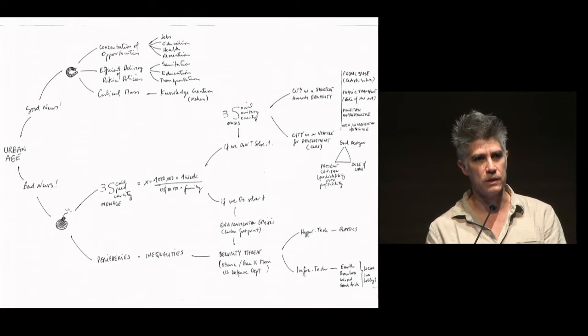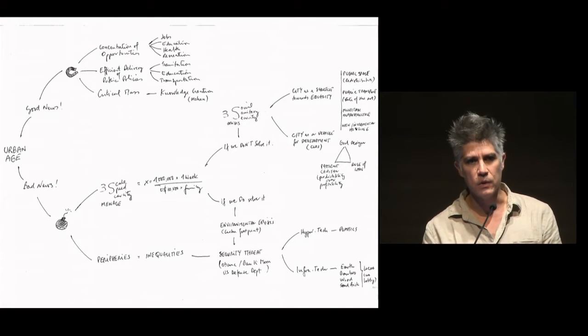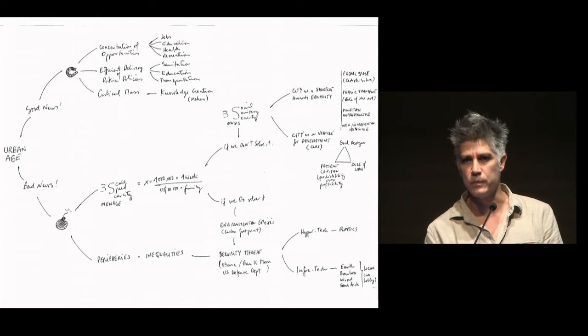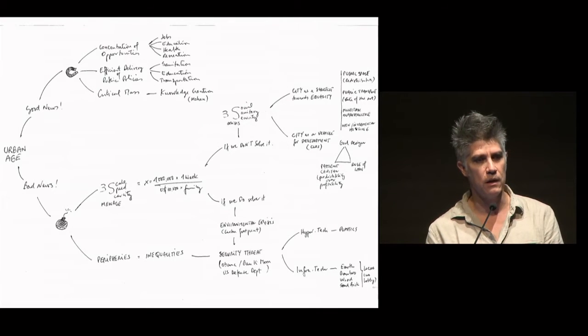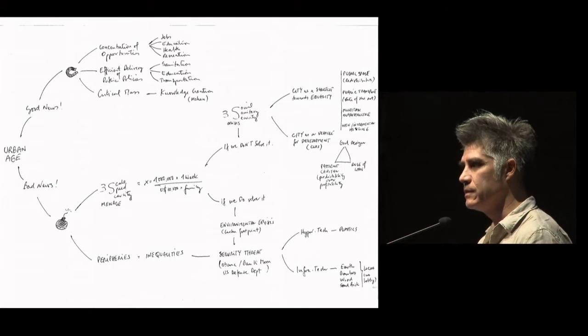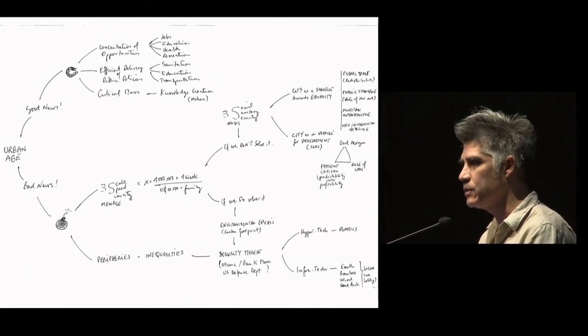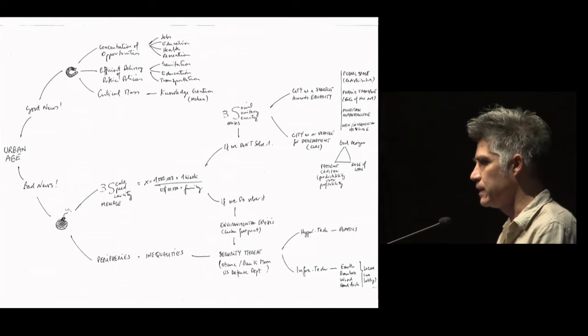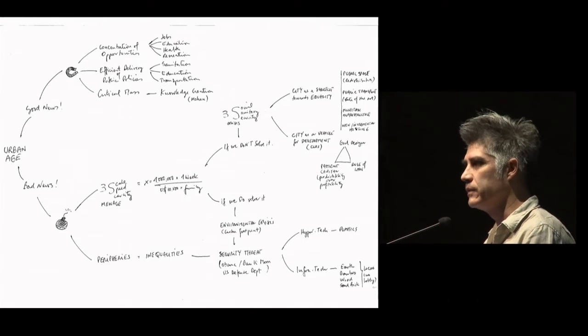In the end, what architects do is to give form to the places where people live. It's not more complicated than that, but also not easier than that. The form of places where people live, and what informs the form of those places is the way we're trying to engage in this bigger question of improving quality of life through the built environment.